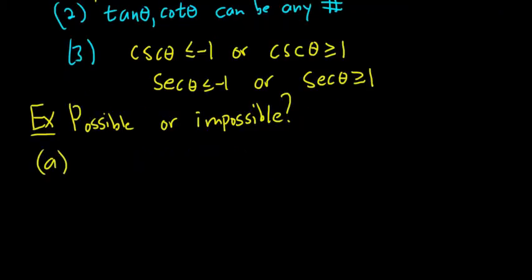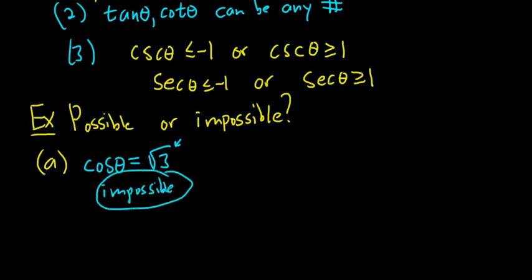So let's see, is it possible for the cosine of theta to be equal to the square root of 3? Well, cosine of theta is between 1 and negative 1. The square root of 3 is bigger than 1. So this is impossible. It cannot happen because cosine of theta, we know it's always, no matter what, between 1 and negative 1.